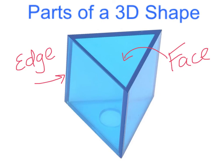This triangular prism has one, two, three, four, five, six vertices.